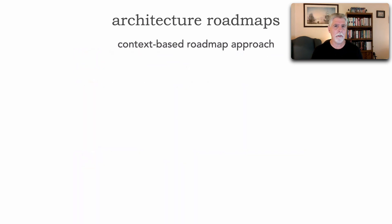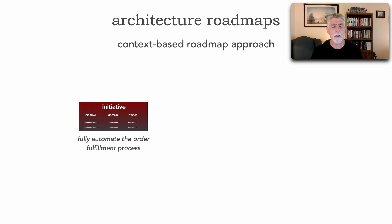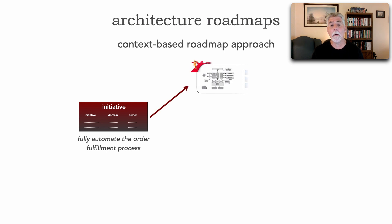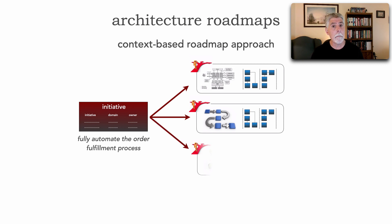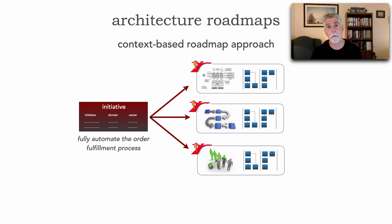There are two main approaches to constructing the consolidated view of a roadmap. The first is called a context-based approach. For example, if our initiative is to fully automate the order fulfillment process, we might require a separate roadmap for the architecture and technology transformation, a separate roadmap for all the business workflows that may change, and a third for any organizational transformation required.